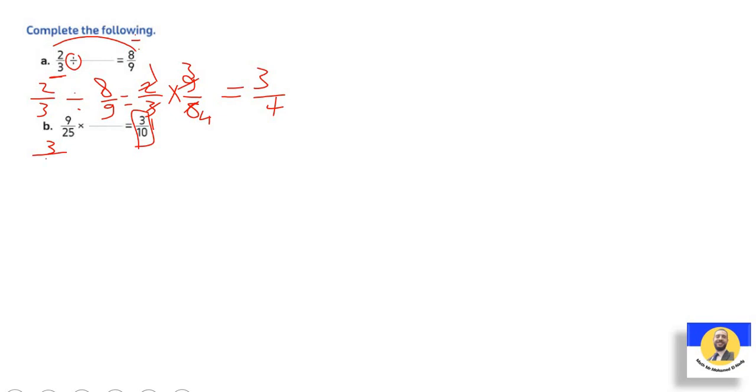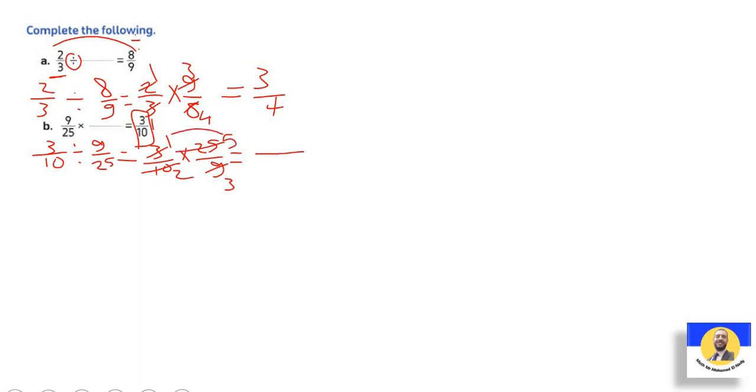Nine-twenty-fifths times what equals three-tenths. Since it's multiplication, change to division: three-tenths divided by nine-twenty-fifths. Use KCF: three-tenths times twenty-five-over-nine. Simplify: three and nine divide by three give one and three; ten and twenty-five divide by five give two and five. Answer: one times five equals five over two times three equals six. Answer: five-sixths.